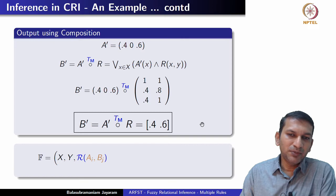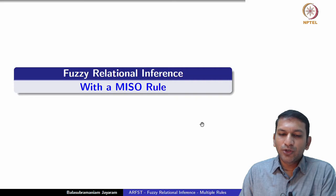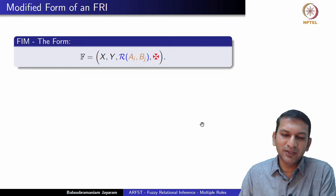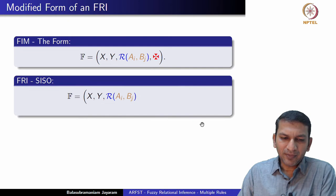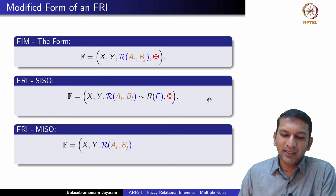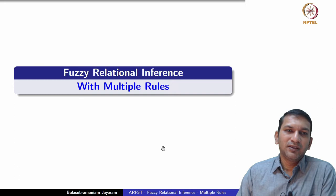In the general CRI scheme, we use the Gödel implication for the rule base and the sup-T composition where T is the minimum T-norm. We have also seen this with Niso rules. This is a general quadruple form for any fuzzy inference: input and output domain X and Y, a rule base, and an inference operation. For a SISO rule we need two things: an operation to capture the relation between antecedent and consequent, and the composition. For MISO rules, we additionally need an operation to combine the antecedents. Now let us move to handling multiple rules.